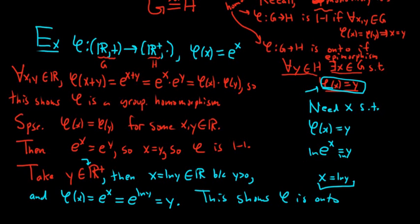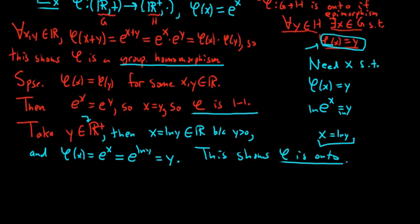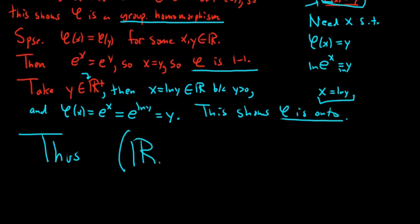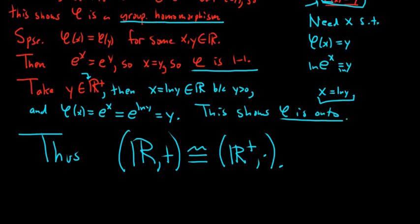So φ is a group homomorphism, it is one-to-one, and it is onto — that means it is an isomorphism. Thus, the group of real numbers under addition is isomorphic to the group of positive real numbers under multiplication.